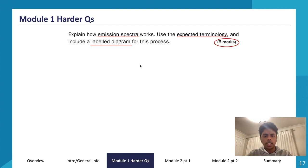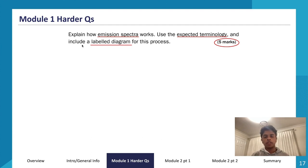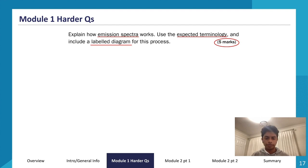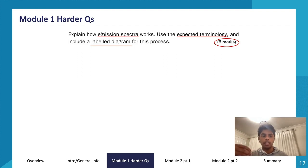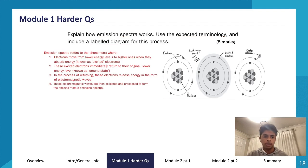The underlying key terms here are: emission spectra, expected terminology, and labeled diagram. The first thing we have to do is explain the process of an emission spectra — how it's produced. Going back to Module 1 terminology, we learned about the flame test. The emission spectra is when electromagnetic radiation is emitted from an electron that gets excited and returns back to ground state. The labeled diagram will most probably show the process of an electron getting excited and coming back to ground state.